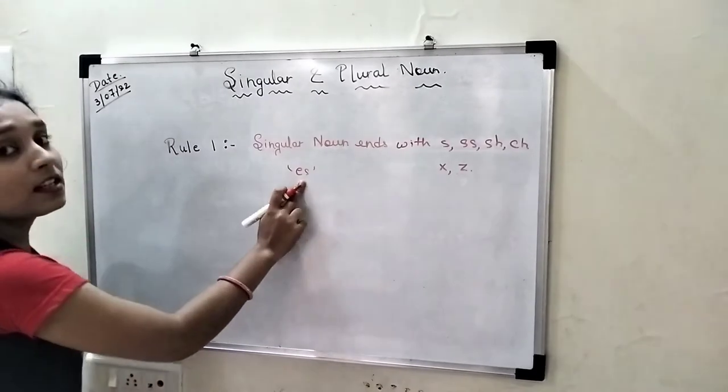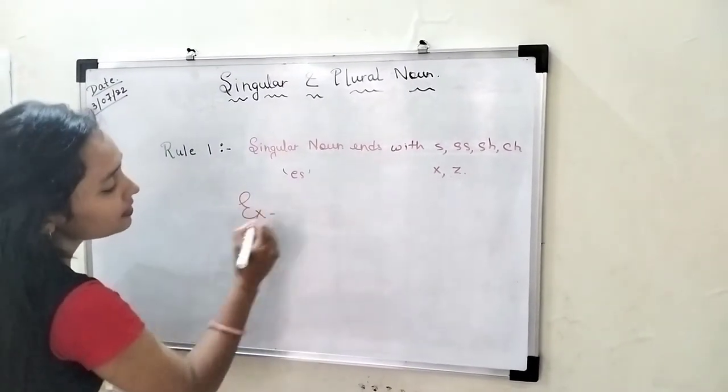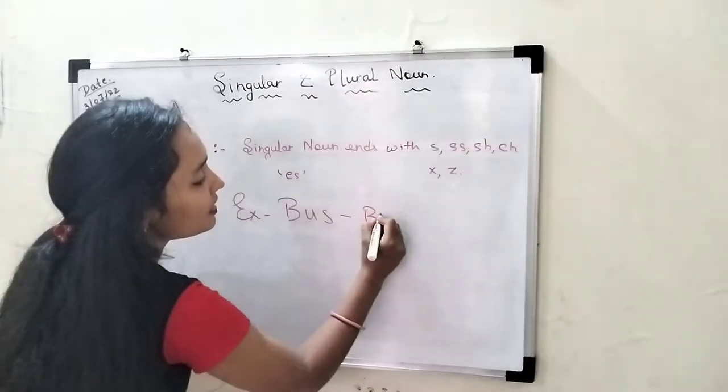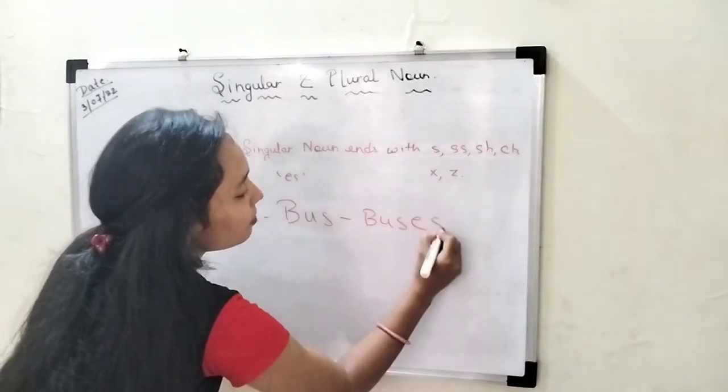To make it plural, for example, if we see the word bus, to make it plural we will add ES at last. See, buses.